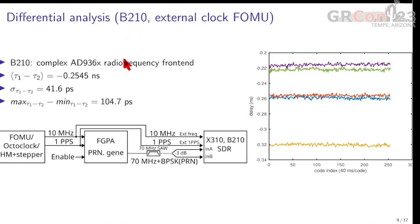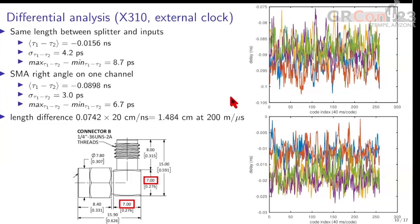The B210 is fitted with a very complex RF front end which might introduce uncontrollable delays from one measurement to another — we don't exactly know how all these analog and digital front ends behave. Moving to the much simpler X310, which only has an ADC sampling at 200 Mbps feeding the FPGA with no RF front end, the standard deviation is now in the picosecond range as opposed to a few tens of picoseconds. Looking from maximum to minimum, we have about seven picoseconds over these five measurements.